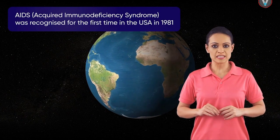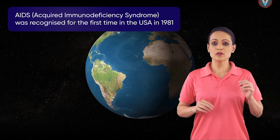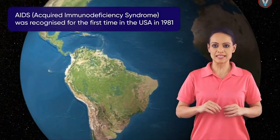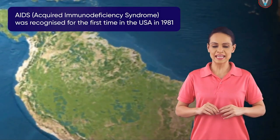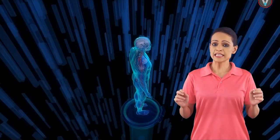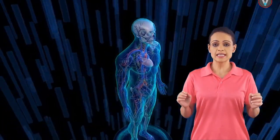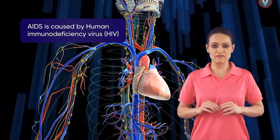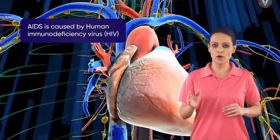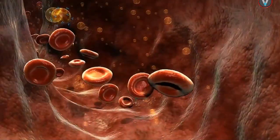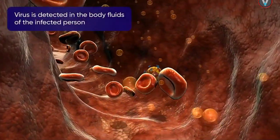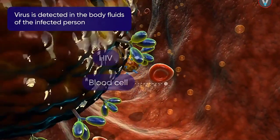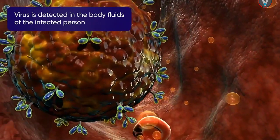Acquired immunodeficiency syndrome was recognized for the first time in the USA in 1981. This viral disease is caused by Human Immunodeficiency Virus, or HIV. It is detected in the blood and other body fluids of the infected person.